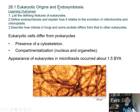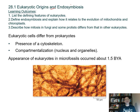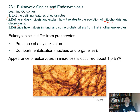Looking at the first section on the origins and the concept of endosymbiosis, which has been mentioned before in your 1406 course and in this course as well. Endo means 'in' and symbiosis means 'to live together.' Your learning outcomes are to list and define features of eukaryotes — they have membrane-bound organelles — and to define endosymbiosis and explain how it relates to the evolution of mitochondria and chloroplasts.